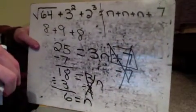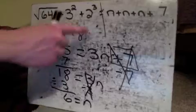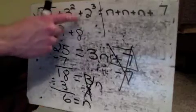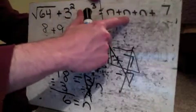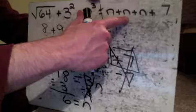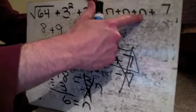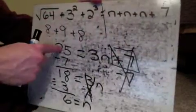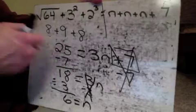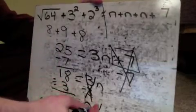I can always go back and check to make sure I was right. We know that this side of the equal sign equals 25, so this side should also equal 25. If n equals 6: 6 plus 6 is 12, 12 plus 6 is 18, 18 plus 7 is 25. So we know that n does, in fact, equal 6.